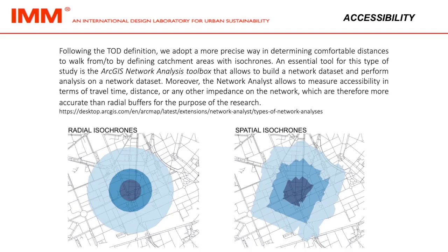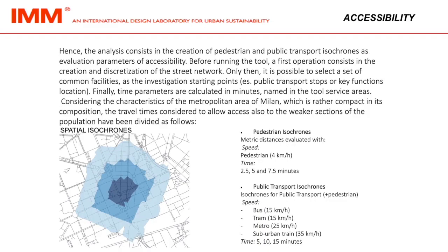An essential tool for this type of study is the ArcGIS network analysis toolbox, which allows building a network dataset and performing analysis on it. The network analyst allows measuring accessibility in terms of travel time, distance or any other impedance on the network, which are therefore more accurate than radial buffers. Hence, the analysis consists in the creation of pedestrian public transport isochronomes as evaluation parameters of accessibility. Before running the tool, a first operation consists in the creation and discretization of the street network.